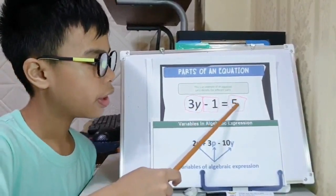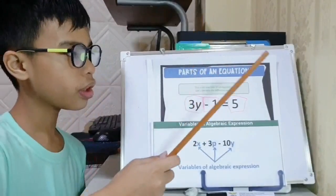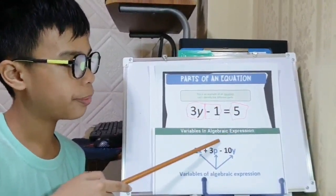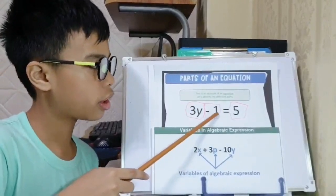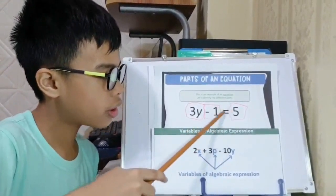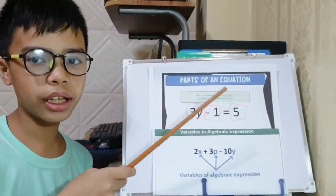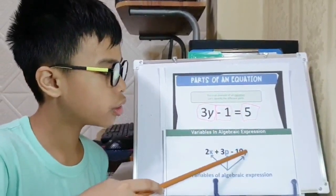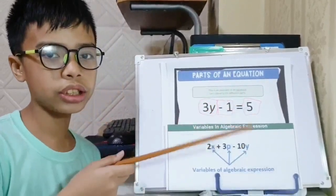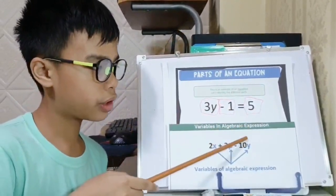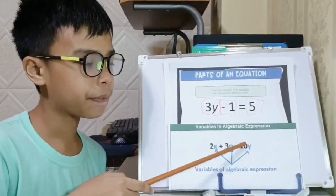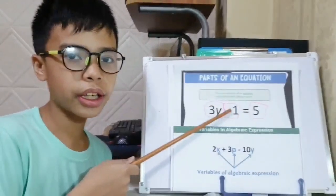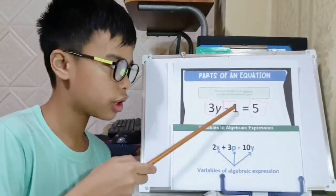And the third box is the number five, it is also a constant. Now let's differentiate the algebraic equation from an algebraic expression. Notice the algebraic equation, as you can see, has an equal sign. The equal sign only exists in algebraic equations. But there's no equal sign in the algebraic expression. The keywords in the algebraic expression are factorize, expand, and simplify. While the keyword here is solve - we solve because there's an equal sign.